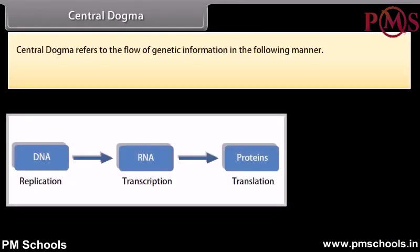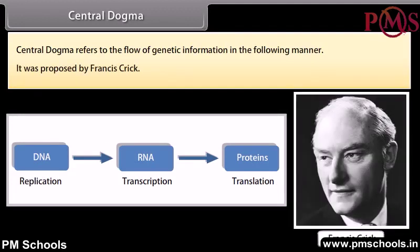Central dogma refers to the flow of genetic information. It was proposed by Francis Crick.